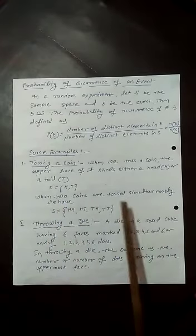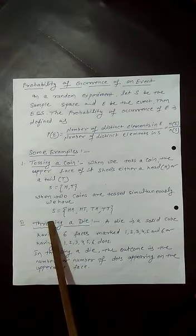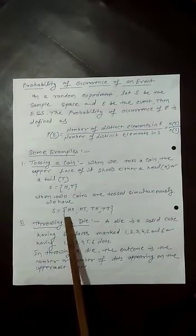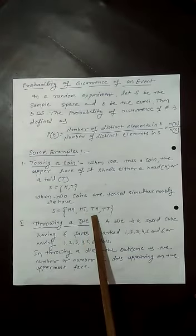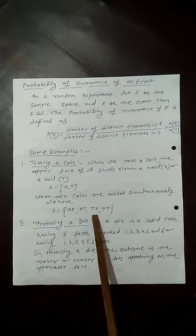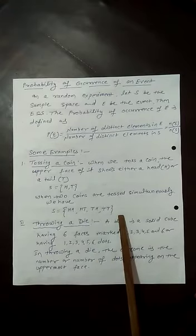When two coins are tossed simultaneously, the sample space S = {HH, HT, TH, TT}, where HH means both coins show heads, HT means first coin is heads and second is tails, TH means first is tails and second is heads, and TT means both are tails.